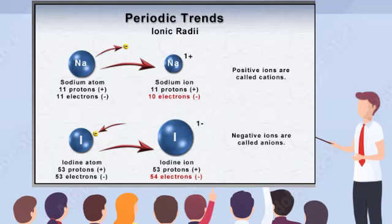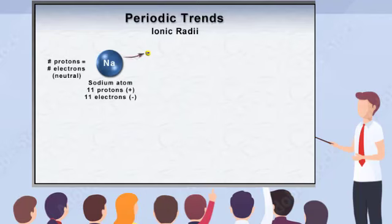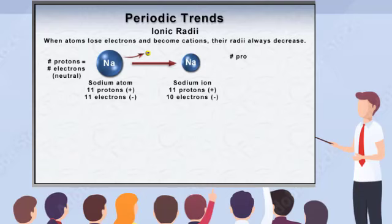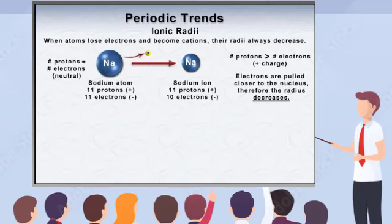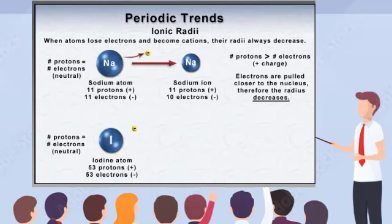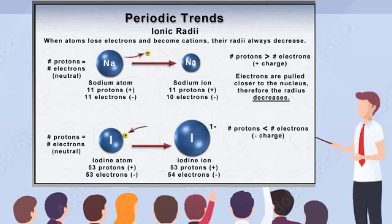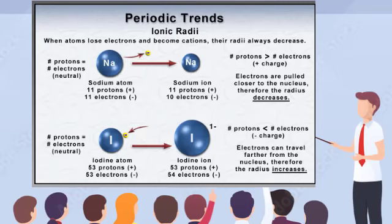Next, you'll learn factors that determine the size of ions and trends in ionic radii. When an atom loses an electron and becomes a cation, it always becomes smaller. The loss of an electron reduces an atom's overall negative charge, allowing the remaining electrons to be pulled closer to the positively charged nucleus, so the cation has a smaller radius. For the opposite reason, when an atom gains electrons and becomes an anion, it always becomes larger. The increase in electrons without an increase in protons allows the negatively charged electrons to travel farther from the nucleus, and the radius of the anion will be larger than the electrically neutral atom.